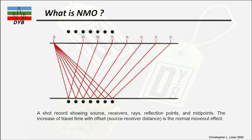When the wave travels from the source down to the subsurface reflector and reaches the receiver, as it reaches the far receiver the travel time increases. This increase in travel time as the source-receiver distance increases is called the normal move out effect.